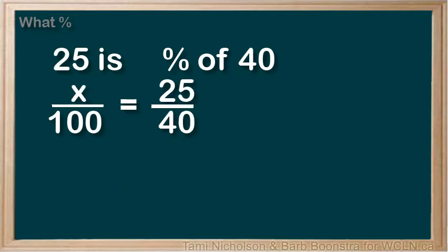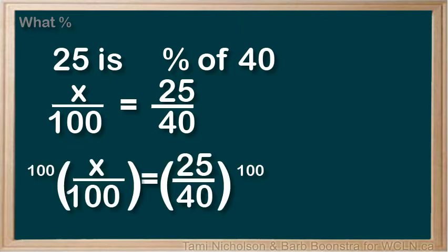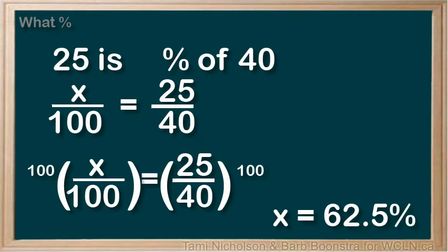Solve the equation using your equation-solving skills. Multiply both sides of the equation by 100 to find that x equals 62.5%. 25 is 62.5% of 40.